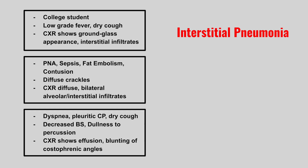Now we have a patient with pneumonia, sepsis, fat embolism, or contusion. Diffuse crackles are heard. Chest x-ray shows diffuse bilateral alveolar or interstitial infiltrates. This is acute respiratory distress syndrome.